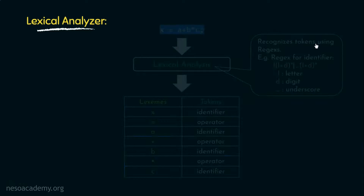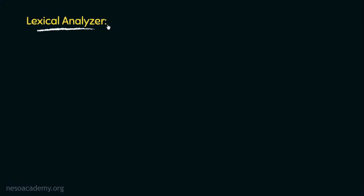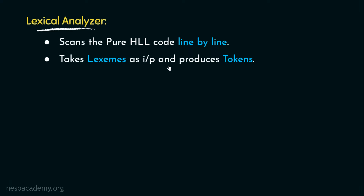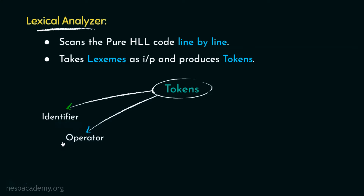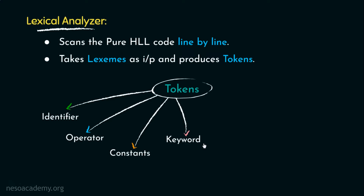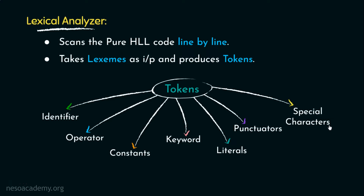Noting down the features of the lexical analyzer: it scans the pure high-level language code line by line, takes lexemes as input, and produces tokens as output. There are several types of tokens: identifiers, operators, constants (fixed values assigned to variables in the source code), keywords such as int, if, and return in C, literals including string literals, punctuators like commas, semicolons, parentheses, braces, and brackets, and special characters like ampersand and underscore. Tokens can be broadly classified into these seven categories.